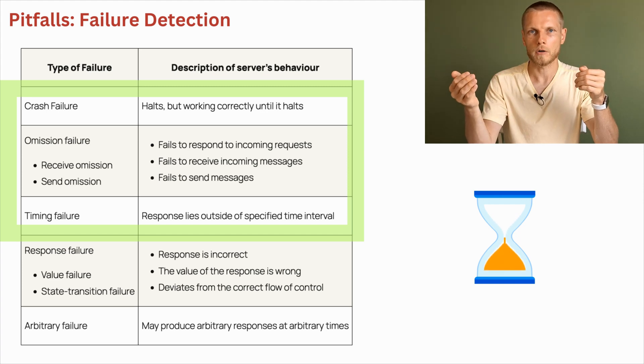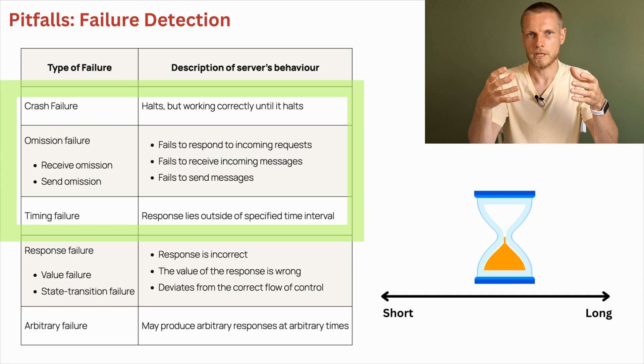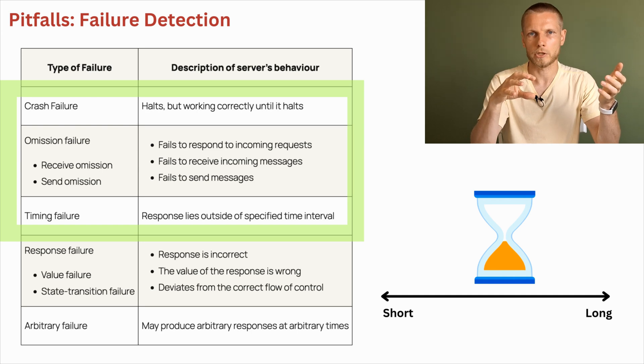There is a hard question on what timeout to choose, because if we choose short timeout, it means that system will remain in an unavailable state for short time and start recovering quickly. But on the other hand, if it was just some false alarm or temporal network glitch, it would lead to some unneeded failovers, and it will be ineffective. On the other hand, if we choose long timeout, then probably we wouldn't have false alarms, false positives. But the time when system is unavailable could be longer.